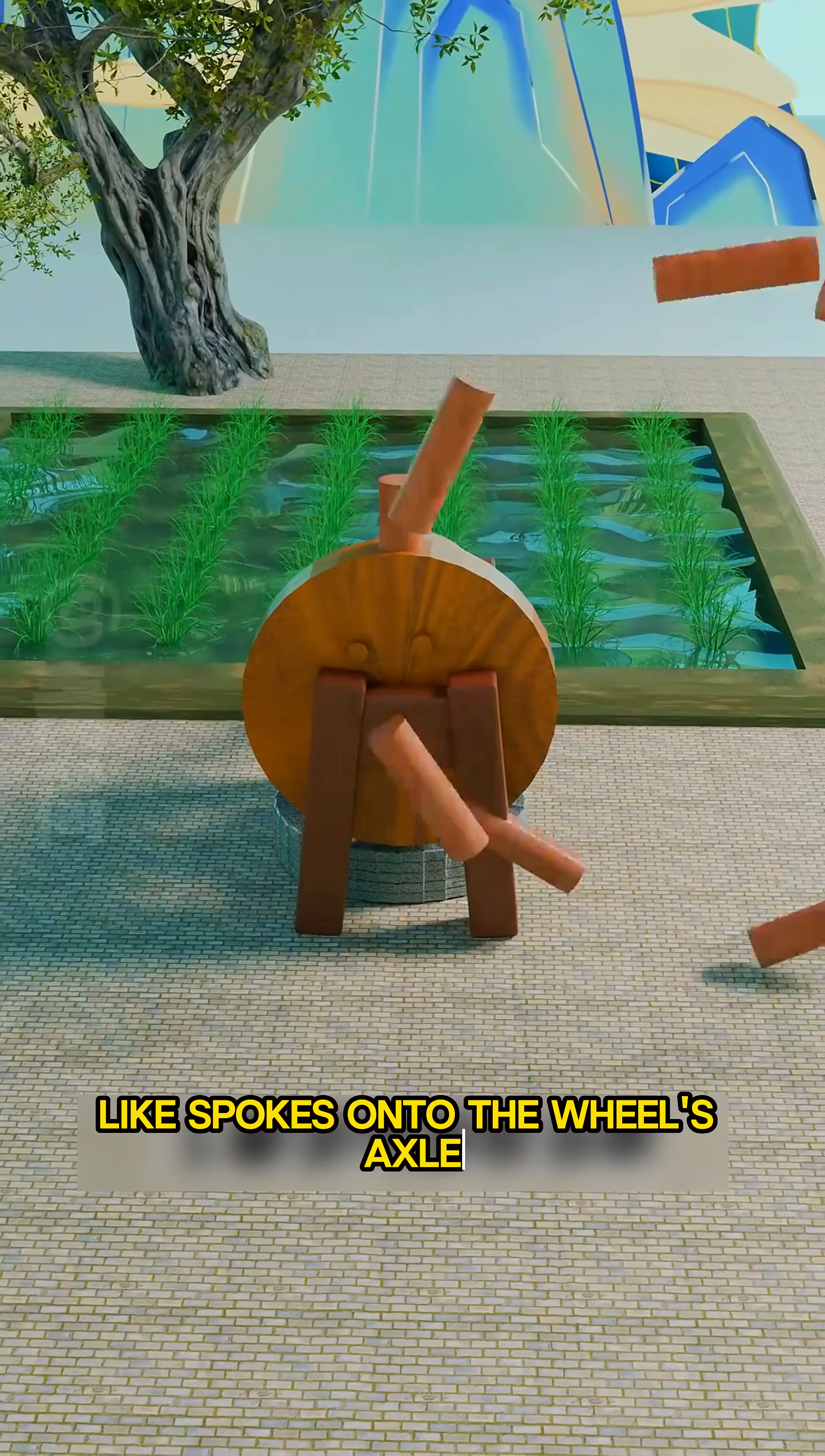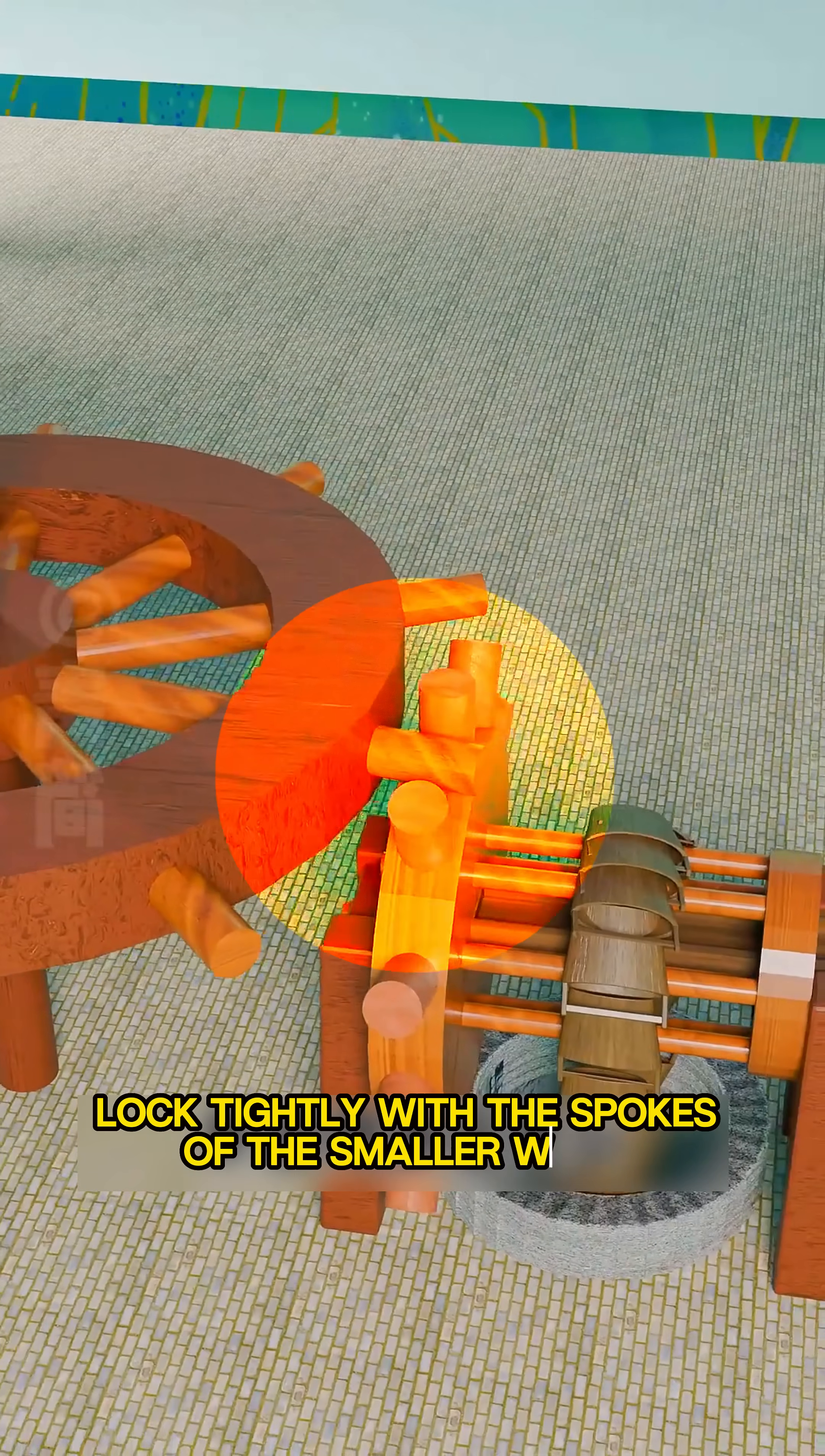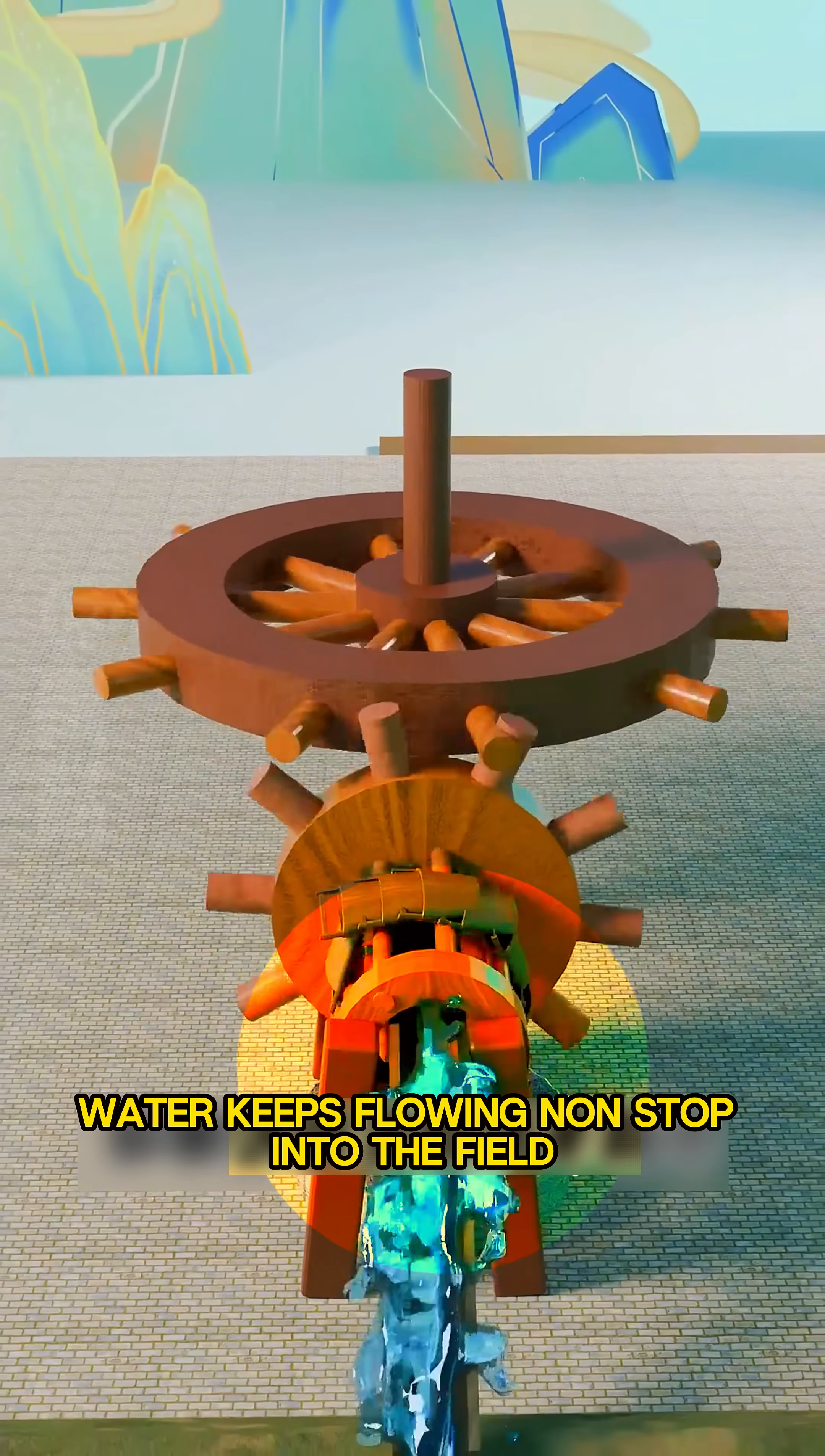You fix strong wooden rods, like spokes, onto the wheel's axle. Then you install a bigger gear wheel beside it, so its teeth lock tightly with the spokes of the smaller wheel. Now, when you turn the big wheel, it spins the smaller one with ease. Water keeps flowing non-stop into the field.